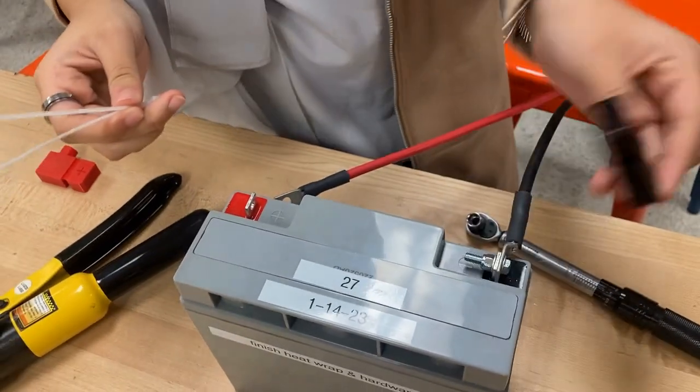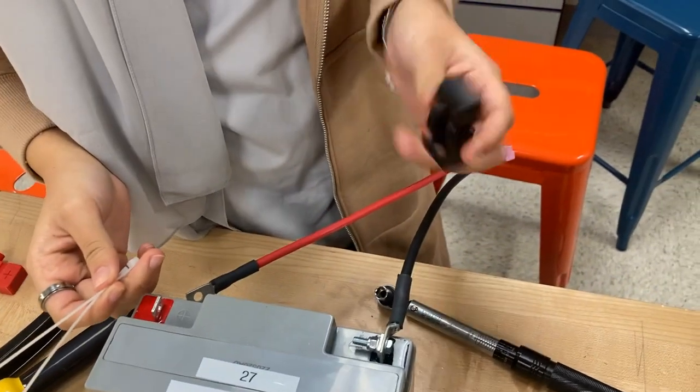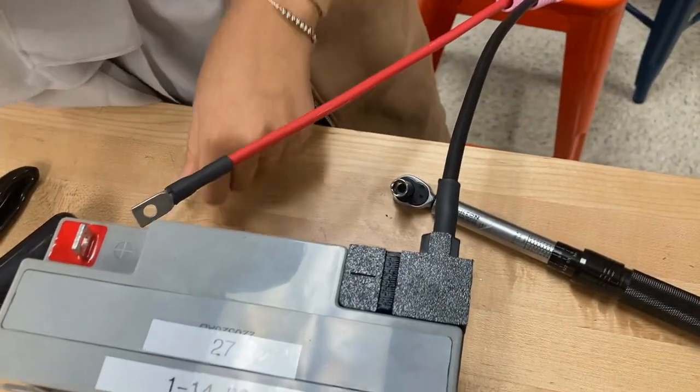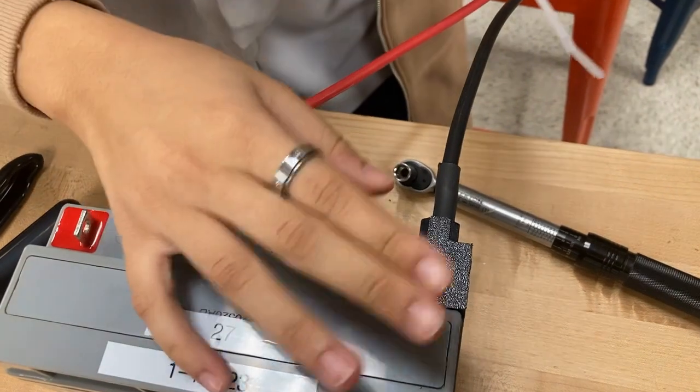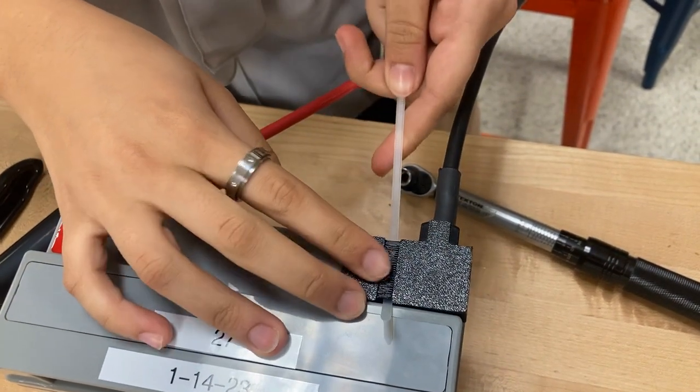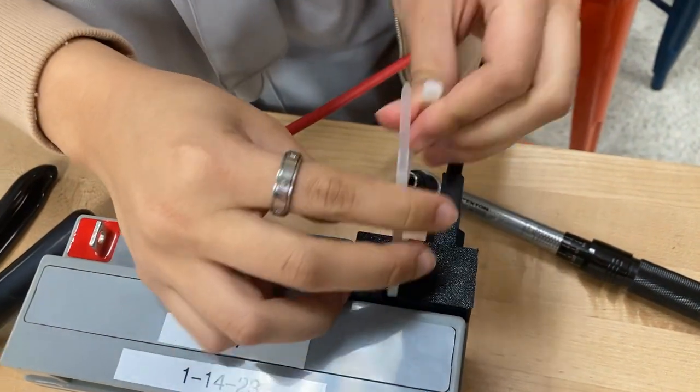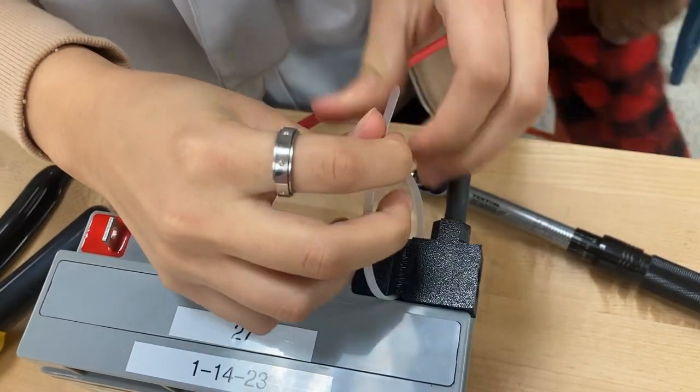The last step of battery installation is to add on the battery caps which protect the battery terminal from any outside damage. All you have to do is put the cap on top, pull in the zip tie and tighten the zip tie just like this.